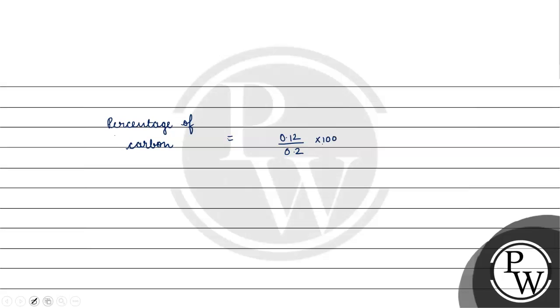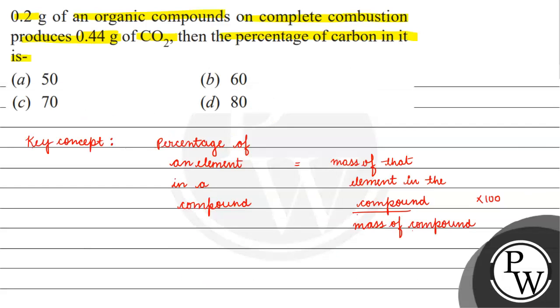The mass of carbon in the compound is 0.12 gram divided by 0.2, which is the mass of organic compound, times 100. This gives us 60%. The correct answer for this question will be option B. I hope you understood it well, thank you and all the best.